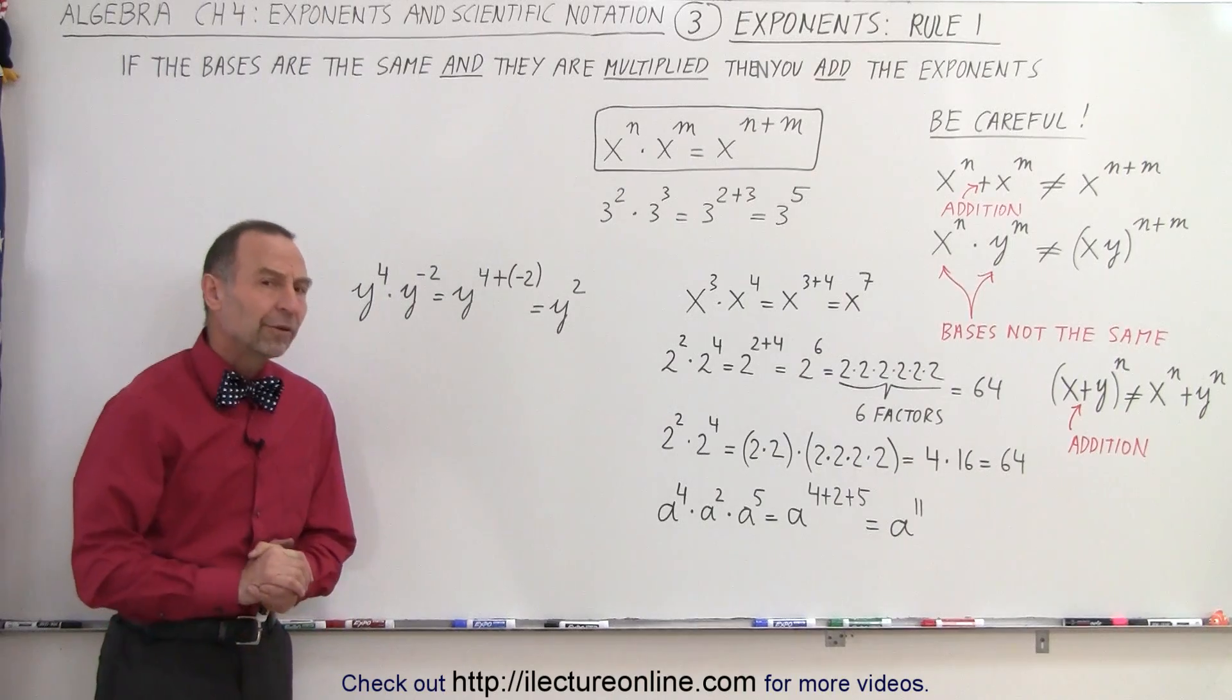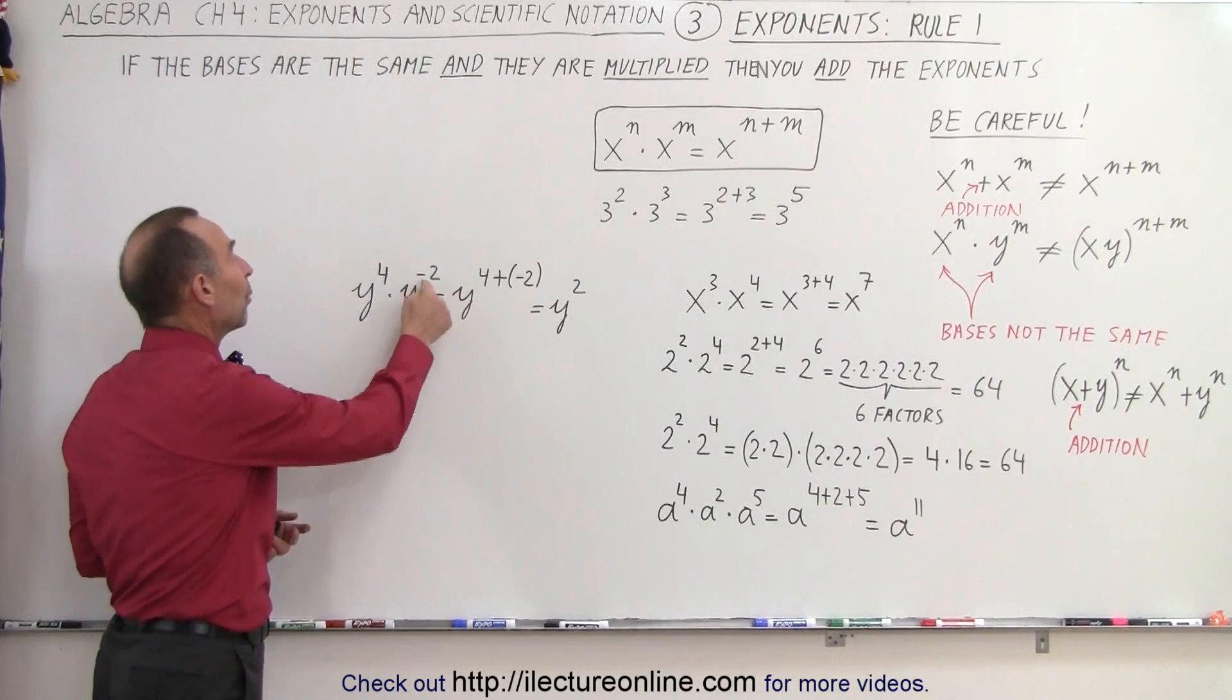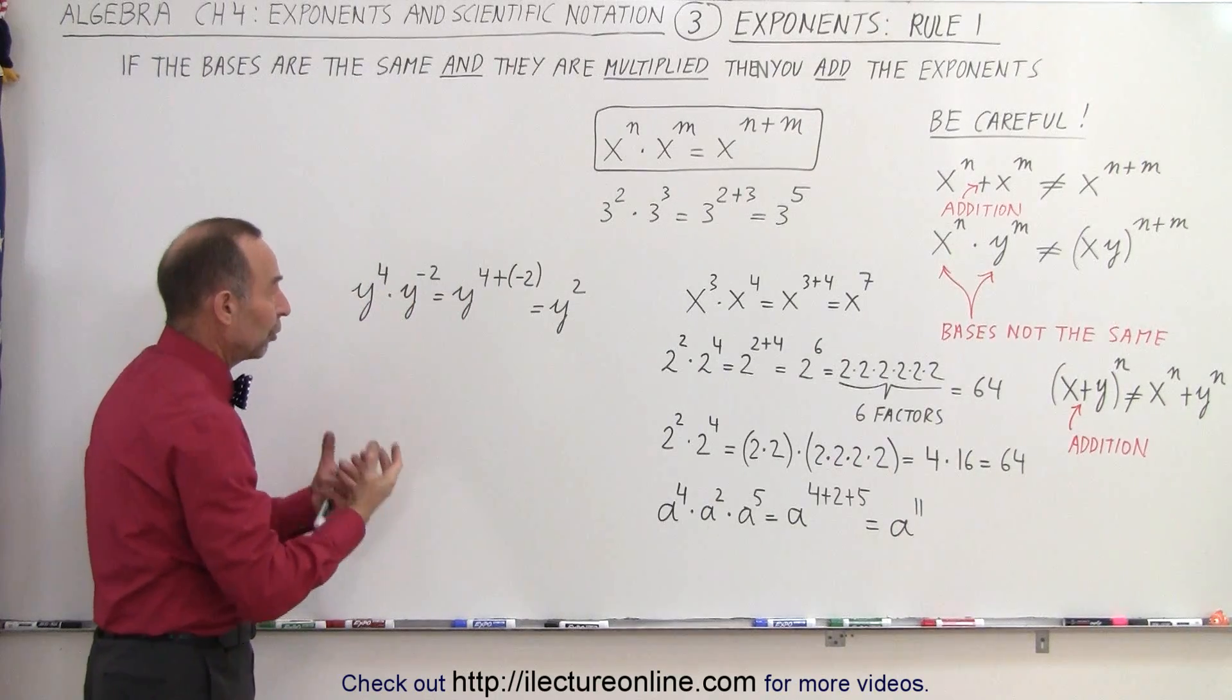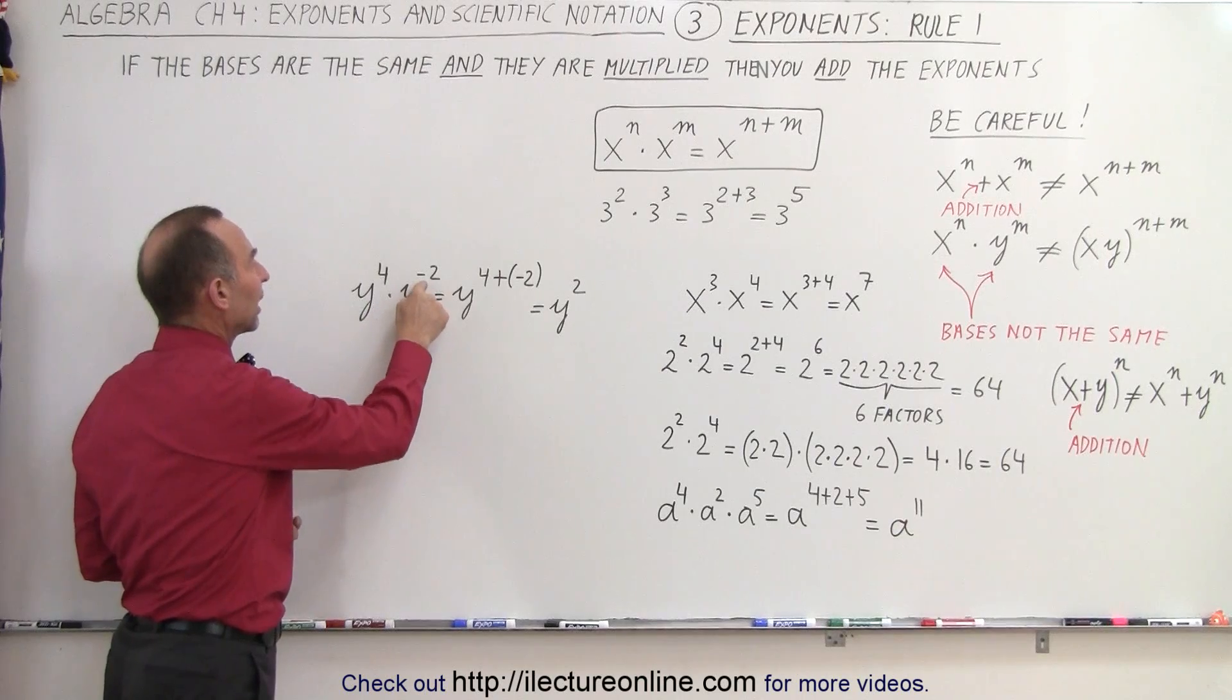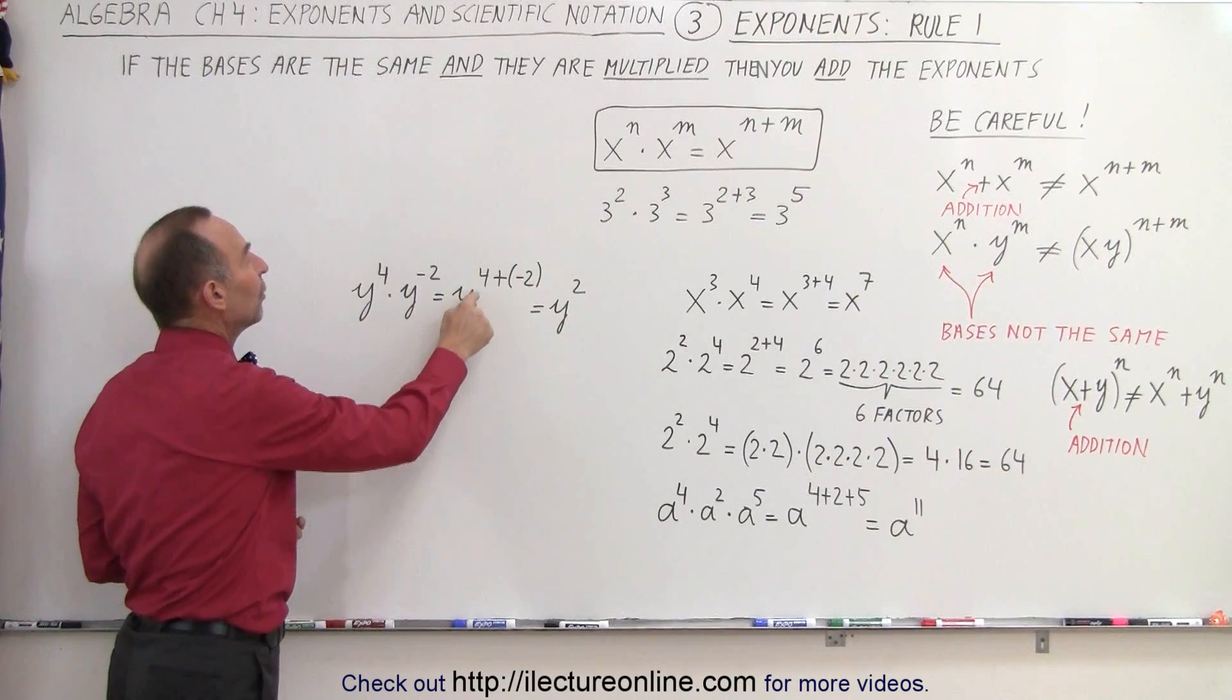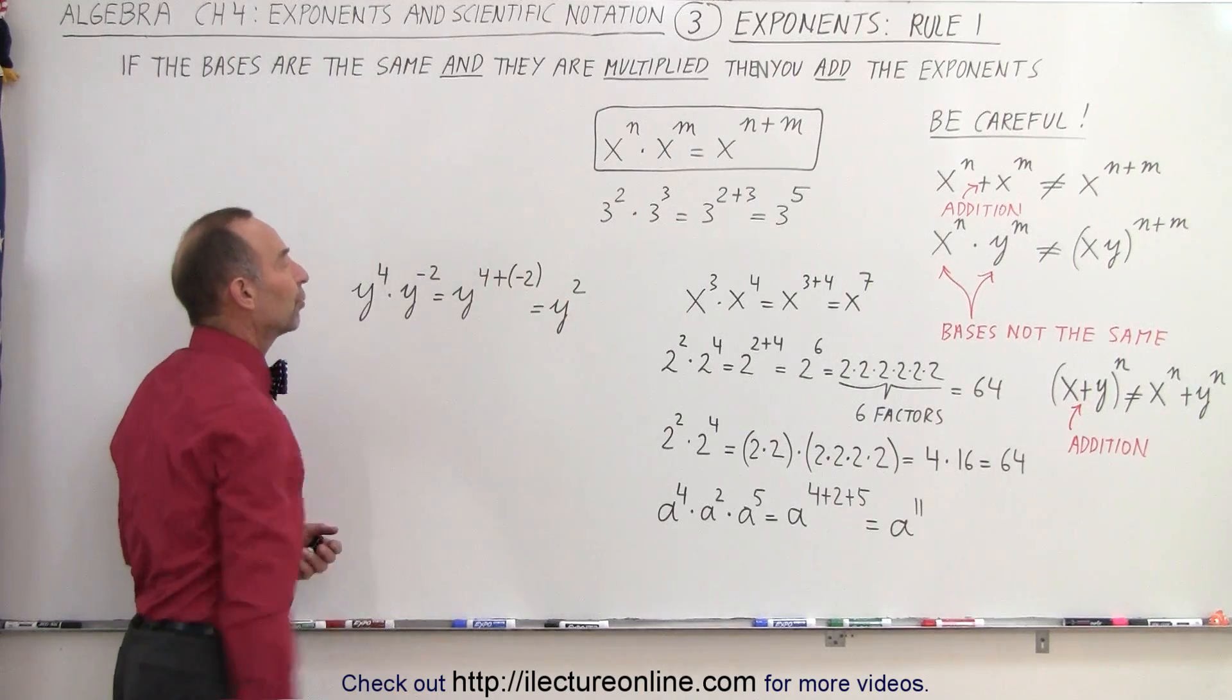And finally, what if we multiply two bases together and one of the exponents is negative? Doesn't matter. We still employ the very same rule. Y to the fourth power times Y to the negative two power is equal to Y to the four plus the negative two. Four plus the negative two is two, so this becomes Y squared.